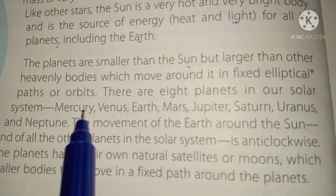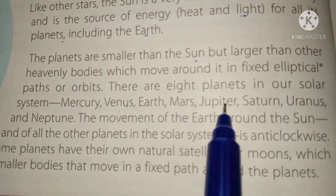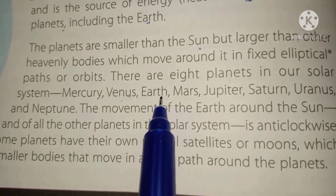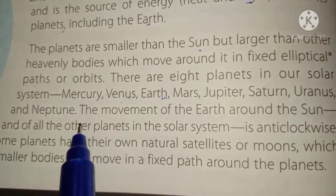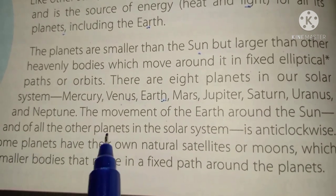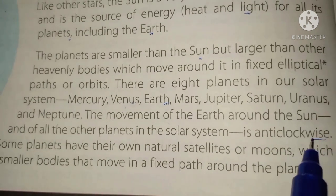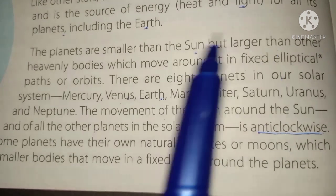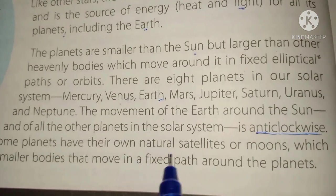There are eight planets in our solar system: Mercury, Venus, Earth, Mars, Jupiter, Saturn, Uranus, and Neptune. Our earth is basically a planet of the sun. The movement of the earth and all other planets around the sun is anticlockwise, which means the direction opposite to clockwise.